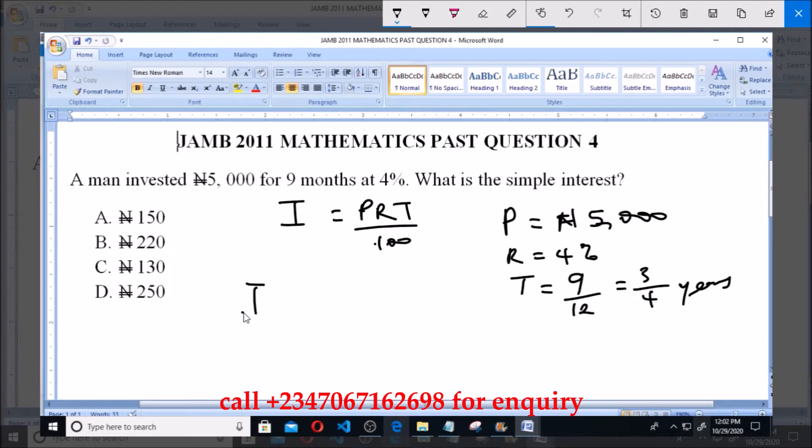5,000 multiplied by 4 multiplied by 3 over 4 all over 100. This 4 we cancel with this 4, so we'll be having these zeros cancel with these zeros.